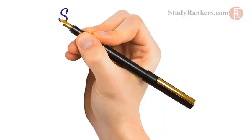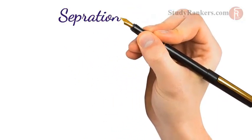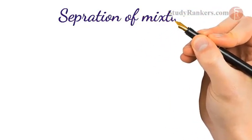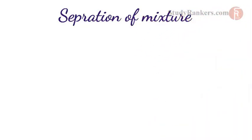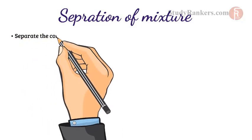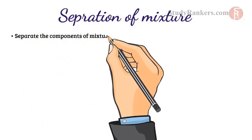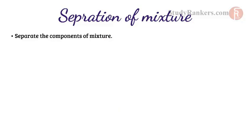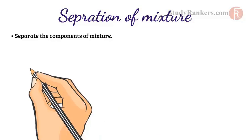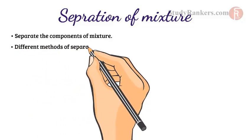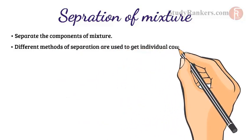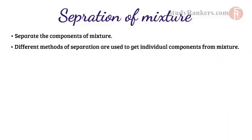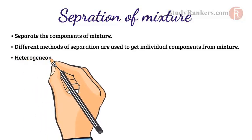Hi again. We have already discussed about the classification of matter on the basis of chemical properties. Now, in this video, we will know the ways to separate the components of a mixture. Different methods of separation are used to get individual components from a mixture.